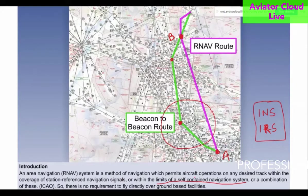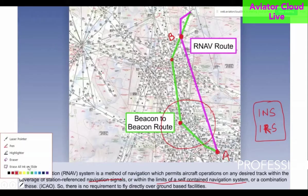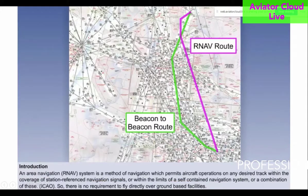So once again, RNAV is the method of navigation which permits aircraft operations on any desired track within the coverage of station-referenced navigation signal, or within the limits of a self-contained navigation system, or a combination of these. There is no requirement to fly directly over ground-based facilities. You can just fly directly from one point to another — say from point A to point B.